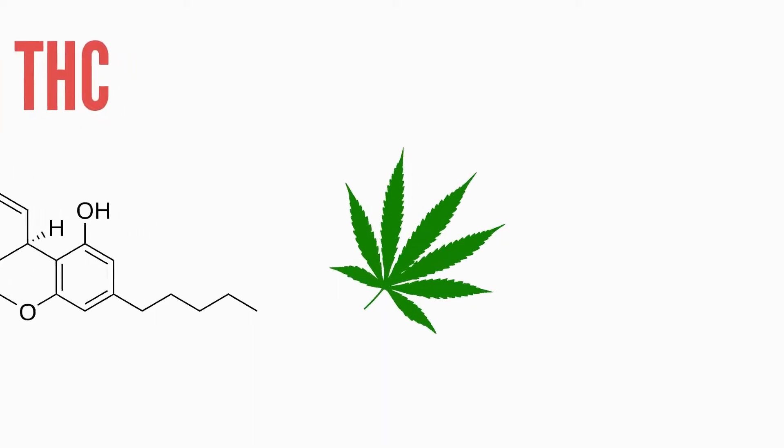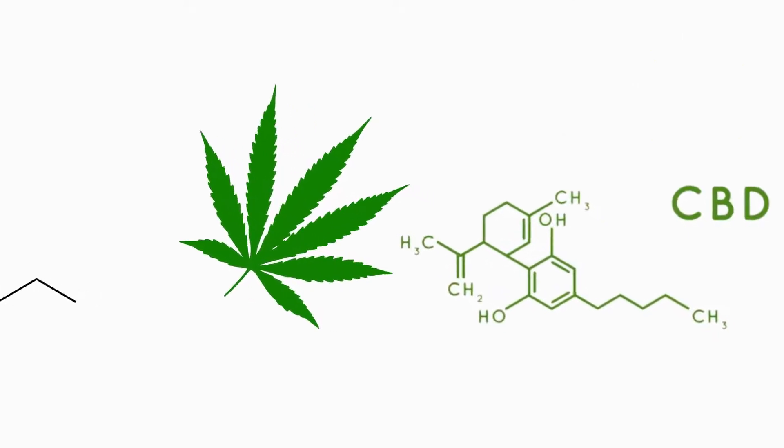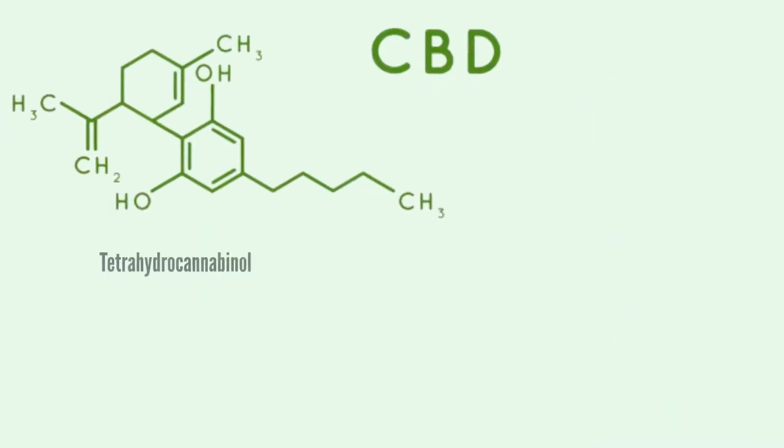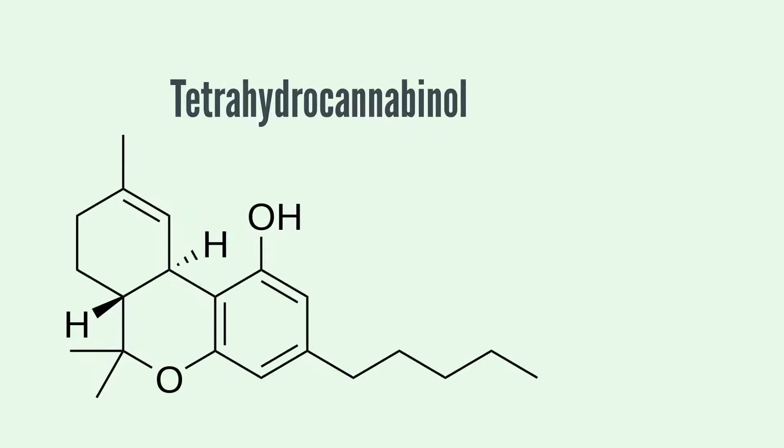THC is the active chemical compound in cannabis, called cannabinoids. Of these cannabinoids, tetrahydrocannabinol or THC is the most abundant.